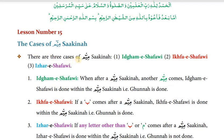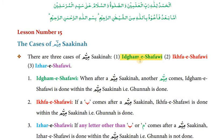There are three cases of Meem Sakinah. In the case of Noon Sakinah we learned four cases, but here in the case of Meem — because Meem is pronounced from the lips, and in Arabic lips are called 'Shafatain', two lips — that's why these cases are called Shafawi.